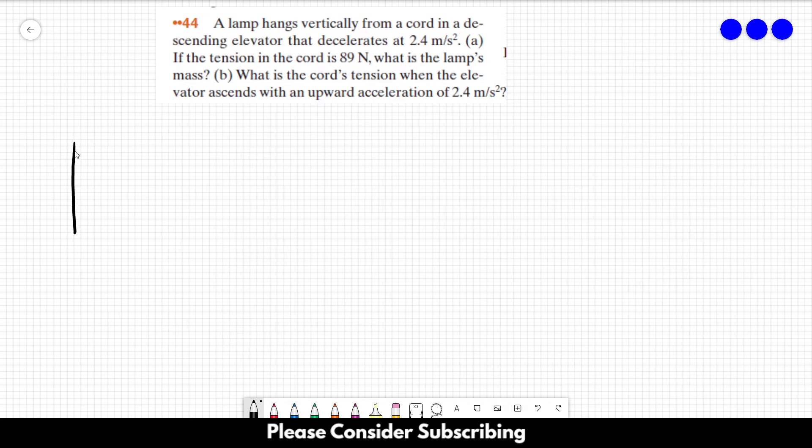So, this is our elevator over here. And this over here is our lamp. So, the first thing that we have to do is to draw our free body diagram for the lamp. And we have only two forces, we have the tension from the cord and we have the force from gravity, let's call it FG.